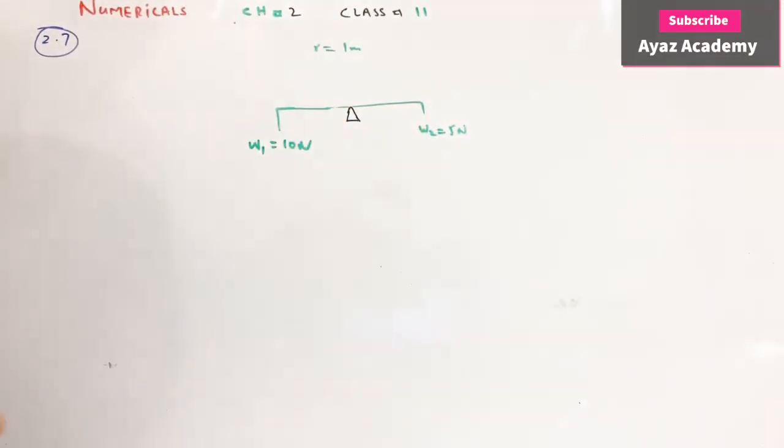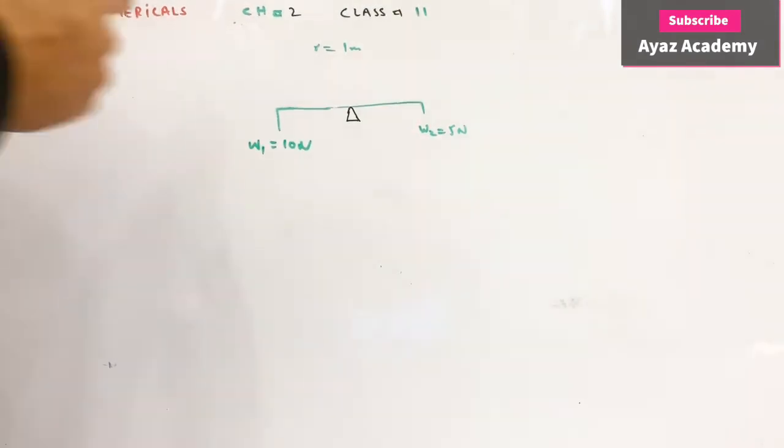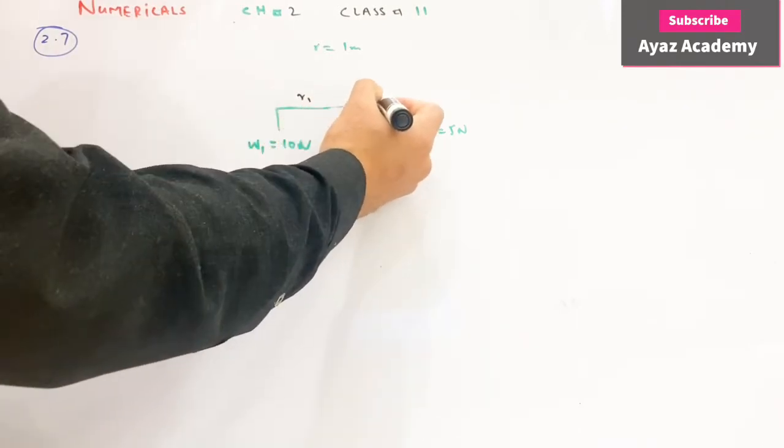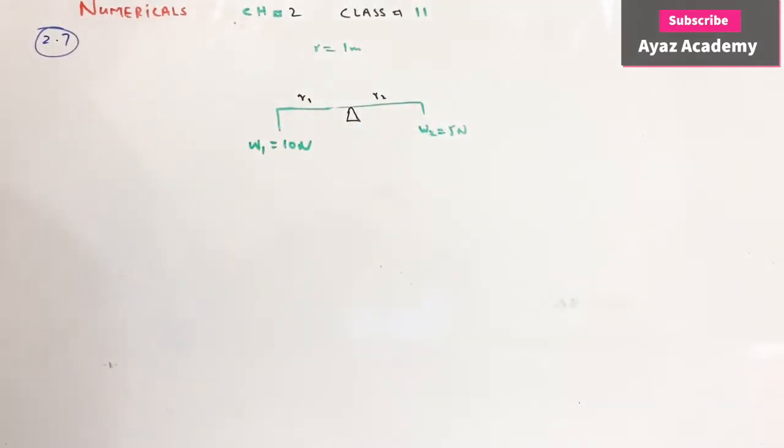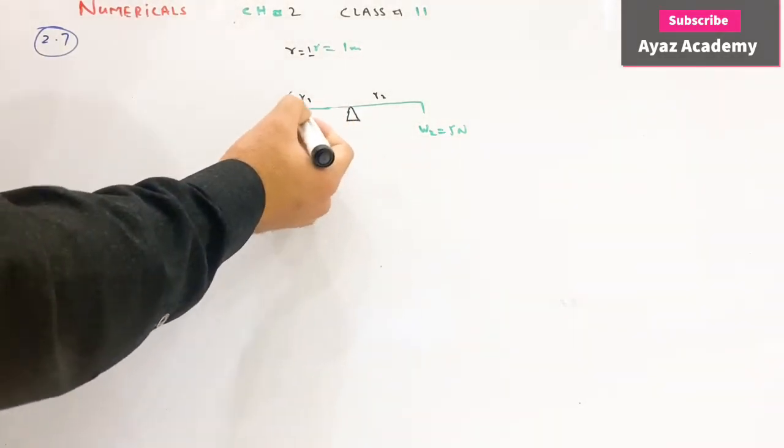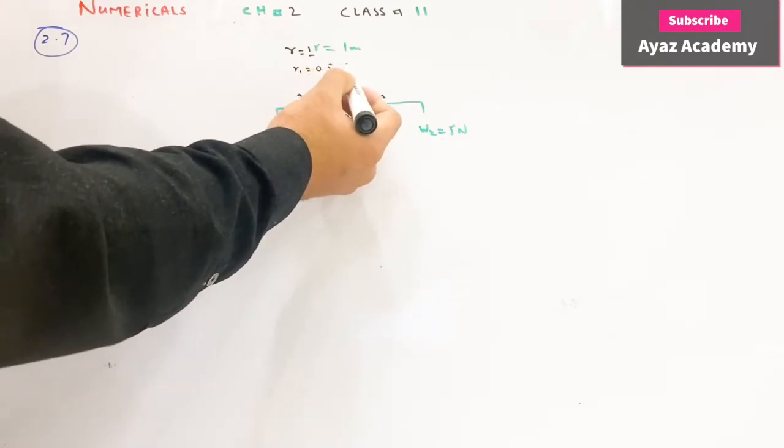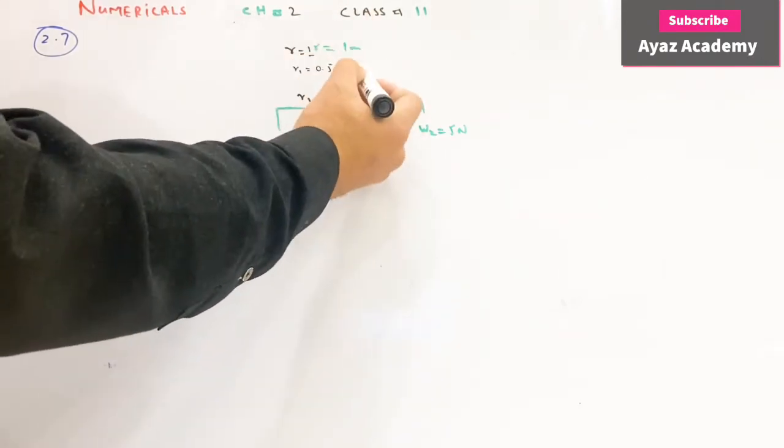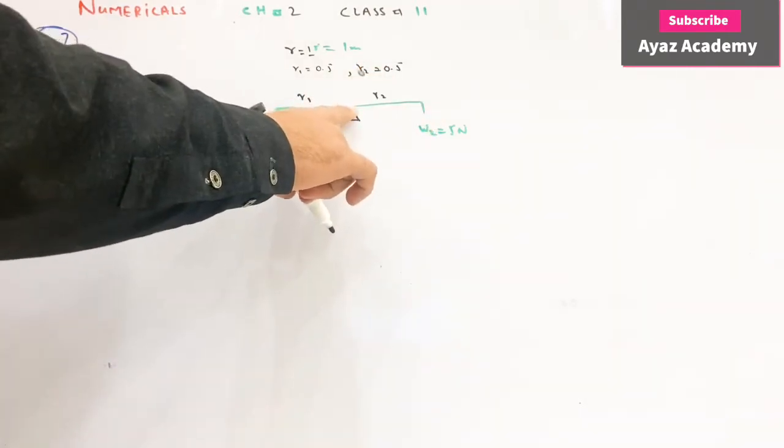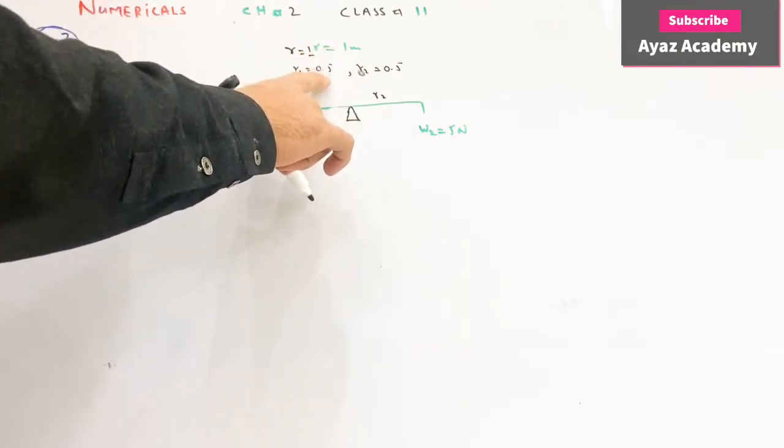What is the center of the weight? Suppose this is the center of the weight. If it is in the center, it will be 0.5 and it will be 0.5. Why? Because it is in the center and the total is 1 meter. So 1 meter divided by 2, it will be 0.5 and 0.5.